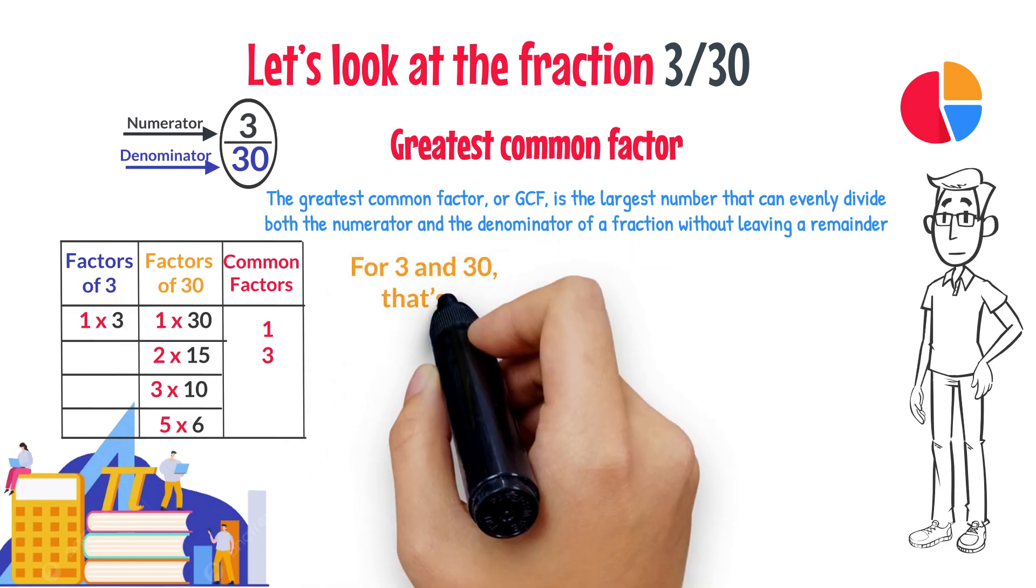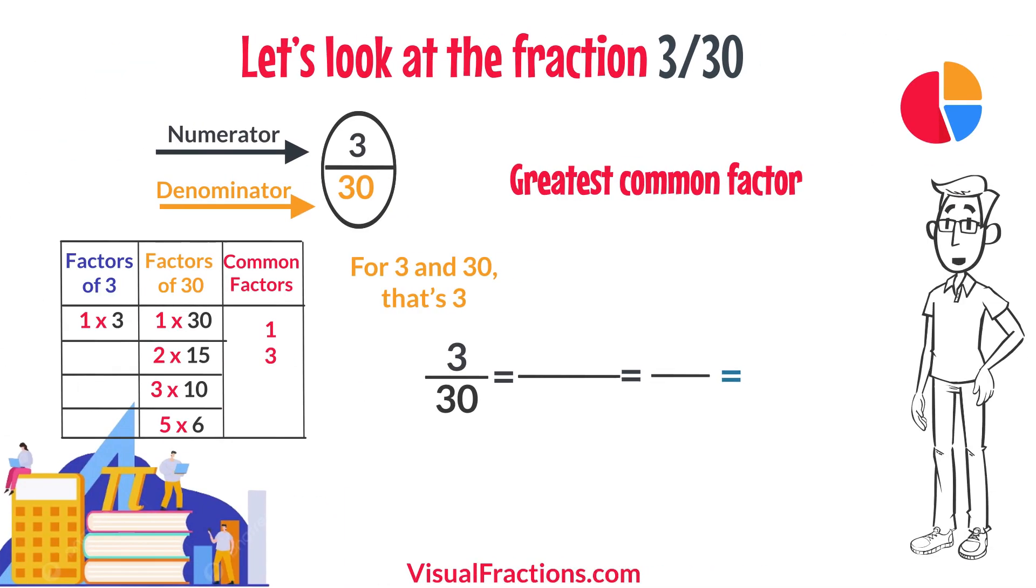For 3 and 30, that's 3. We start by dividing 3 by 3, which gives us 1. Then we divide 30 by 3, which results in 10.